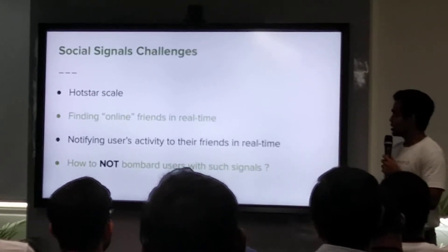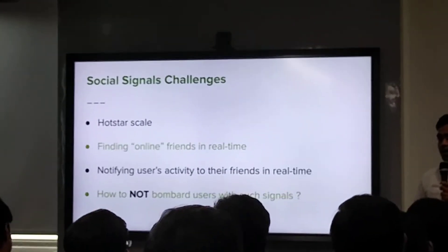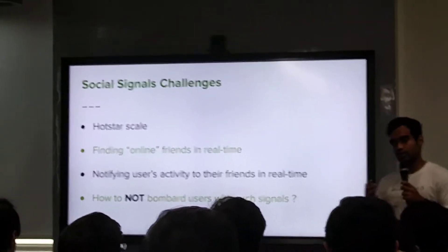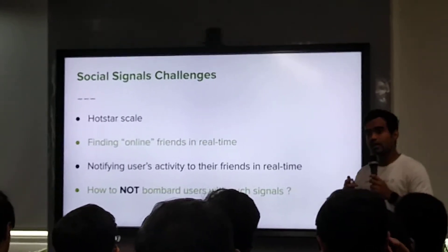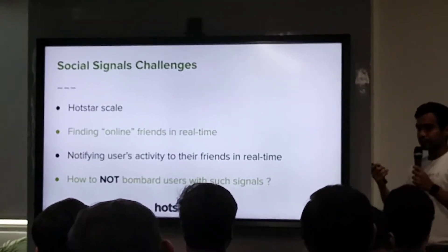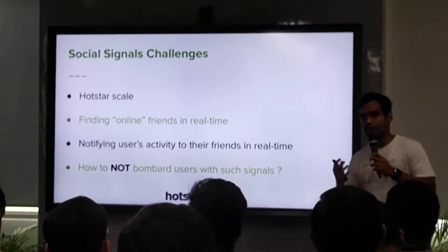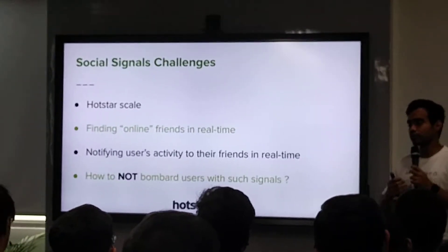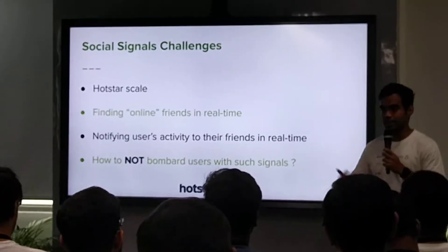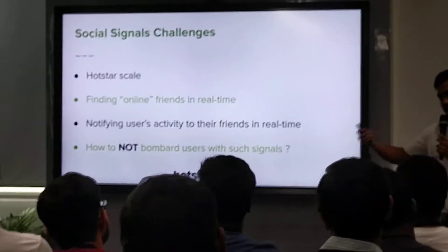The second challenge is finding the friends of users who are online, because if we can't find the friends, we can't notify them. We have a 22 billion node Amazon Neptune cluster that holds all the friends and users — it is that large. The third challenge was, once we found the friends, we have to connect them somehow, saying that your friend is doing this, or your friend chatted, or your friend came online, so you can start chatting or play again with them.